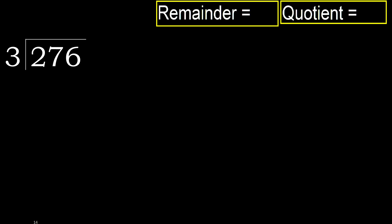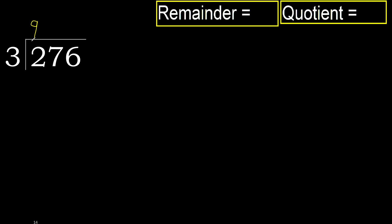276 divided by 3. 2 is less, therefore next 27. 27 is not less, therefore with 27 and 3, multiply by which number is nearest to 27 but not greater — 3 times 9 is 27.